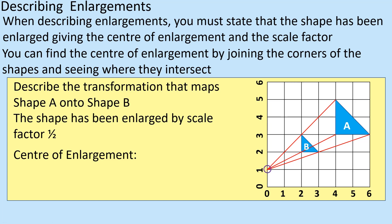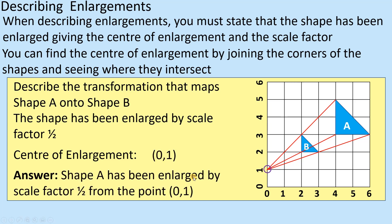So how we write that, and this is the important part of it, is you write all that down. You write the fact that the shape has been enlarged - that's a key part of it. It's enlarged by a scale factor of half and then from the point (0,1). So that answer, how it's written there, please make sure you read it. They are the key points to make sure you get that correct in the exam.